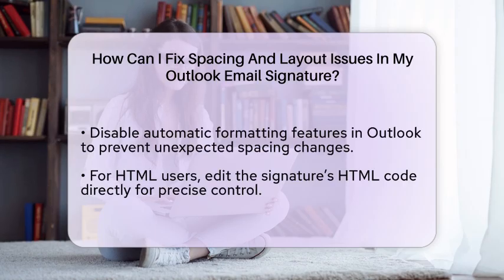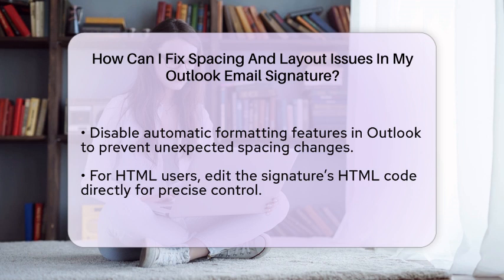It is also a good idea to disable automatic formatting features. Navigate to Outlook's Options, then Mail, and select Editor Options. From there, turn off options like "Automatically format as you type." This action can prevent unexpected spacing changes in your signature.